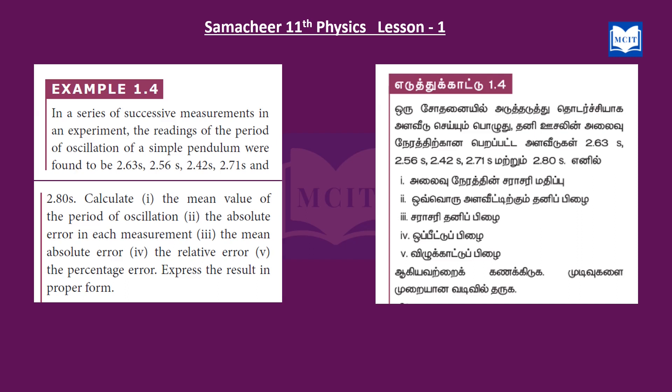In a series of successive measurements in an experiment, the readings of the period of oscillation of a simple pendulum were found to be 2.63 seconds, 2.56 seconds, 2.42 seconds, 2.71 seconds, and 2.80 seconds.